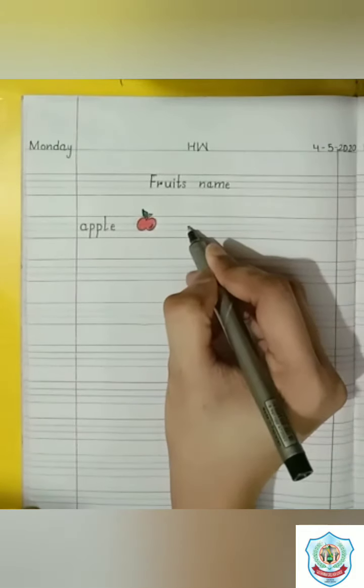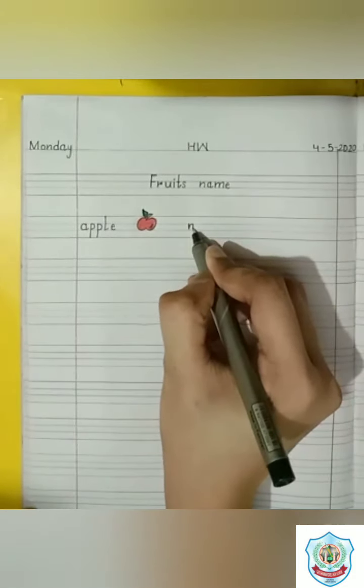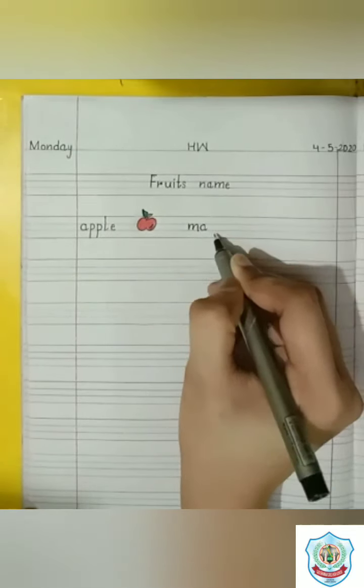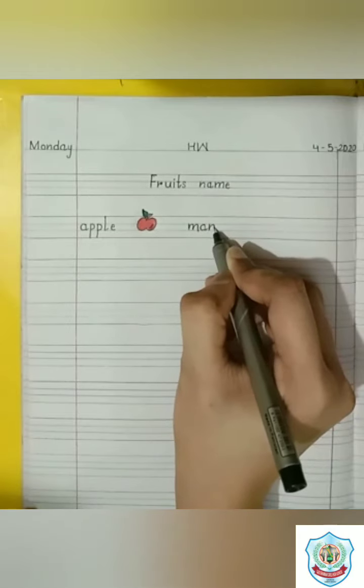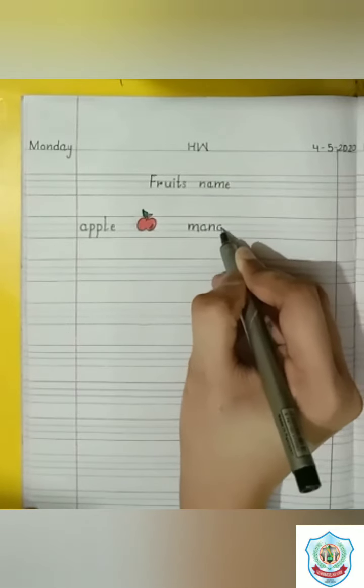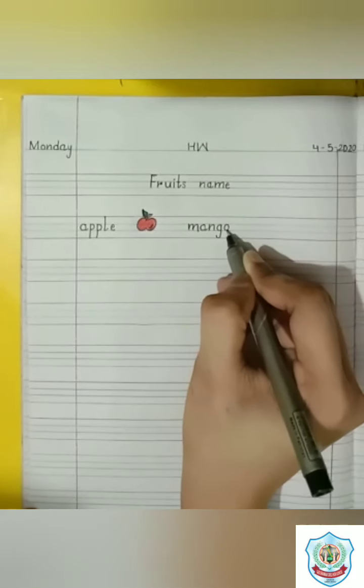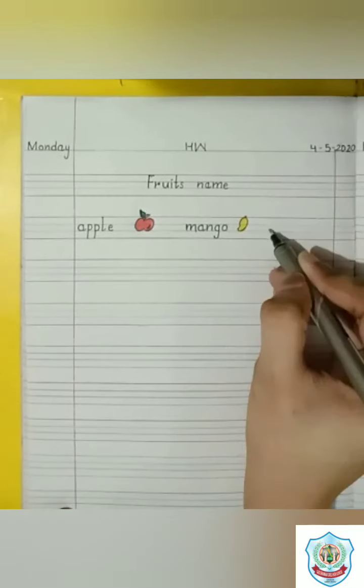The next one is mango. M has a sound M. A has a sound A. N has a sound N. G has a sound G. And O has a sound O. Mango. This is a picture of mango.